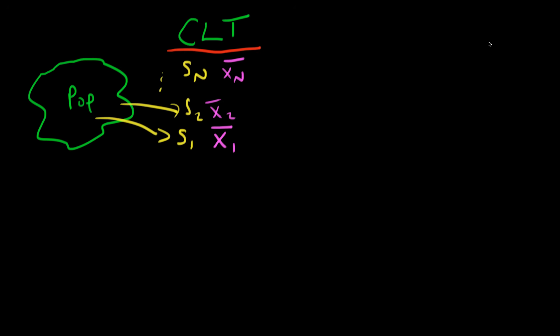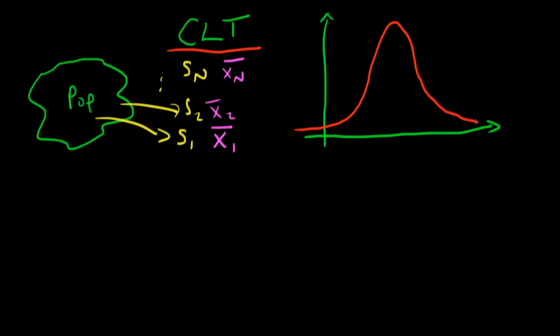If I calculate the sample mean for each of those different samples from my population, then independent of my original population distribution, the central limit theorem says that our frequency distribution of x-bar is going to be normally distributed around the true population mean mu.